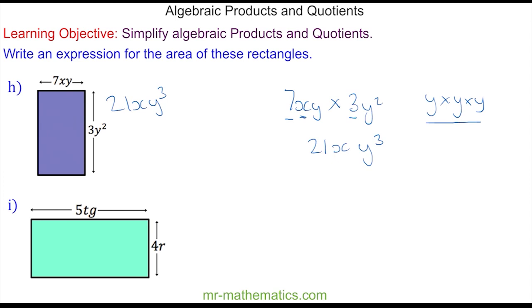Finally, for question i, we have 5tg, which is the length, multiplied by the width of 4r. 5 times 4 is 20. tg multiplied by r. We write as tgr.